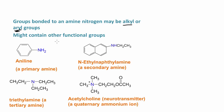The groups bonded to an amine nitrogen can be alkyl groups or aryl groups — in other words, a benzene ring. For example, aniline is a benzene ring with the amino group, and this is a primary amine — we have the nitrogen bonded to this carbon and two hydrogens. Here we have N-ethyl naphylamine, a secondary amine — nitrogen is bonded to a hydrogen and another carbon. Here we have triethylamine, a tertiary amine — nitrogen is bonded to three carbons. And here we have a quaternary ammonium ion, acetylcholine, which is a neurotransmitter, with a positive charge on the nitrogen and four organic groups.